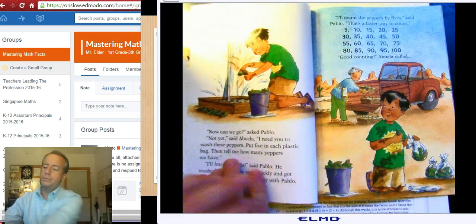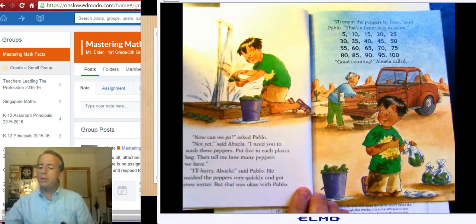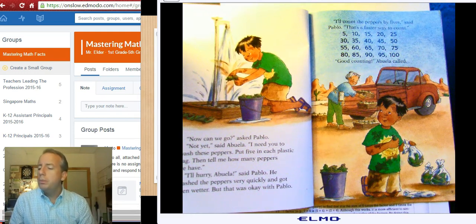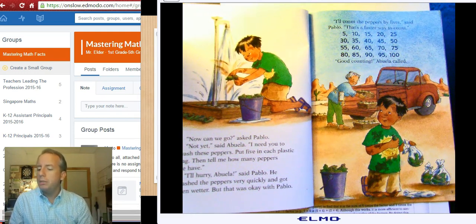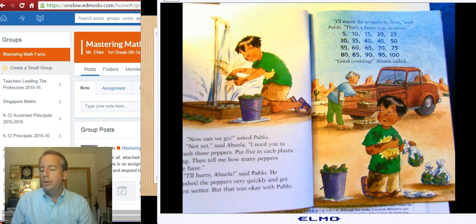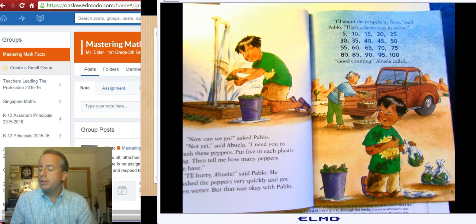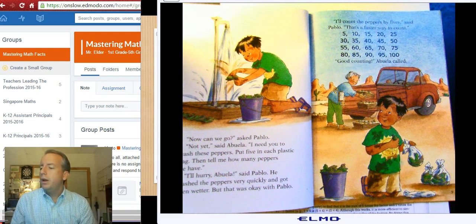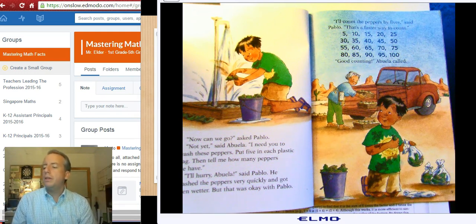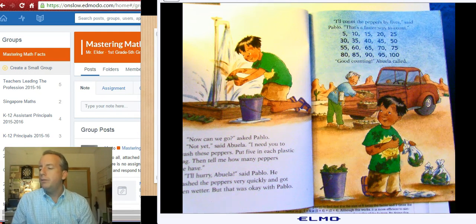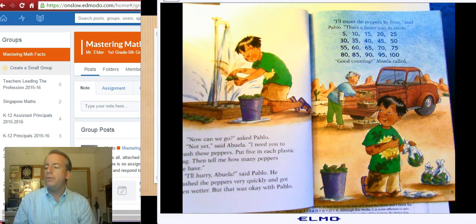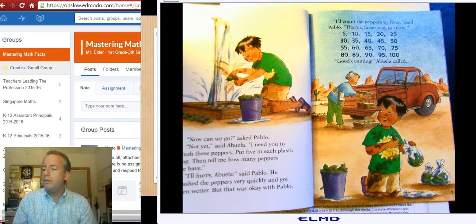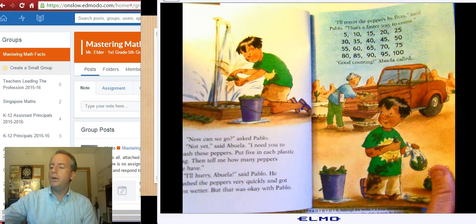Now can we go? asked Pablo. Not yet, said Abuela. I need you to wash these peppers. Put five in each plastic bag, and then tell me how many peppers we have. I'll hurry, Abuela, said Pablo. He washed the peppers very quickly and got even wetter, but that was okay with Pablo. I'll count the peppers by five, said Pablo. That's a faster way to count. Five, ten, fifteen, twenty, twenty-five, thirty, thirty-five, forty, forty-five, fifty, fifty-five, sixty, sixty-five, seventy, seventy-five, eighty, eighty-five, ninety, ninety-five, a hundred. Good counting, Abuela called.